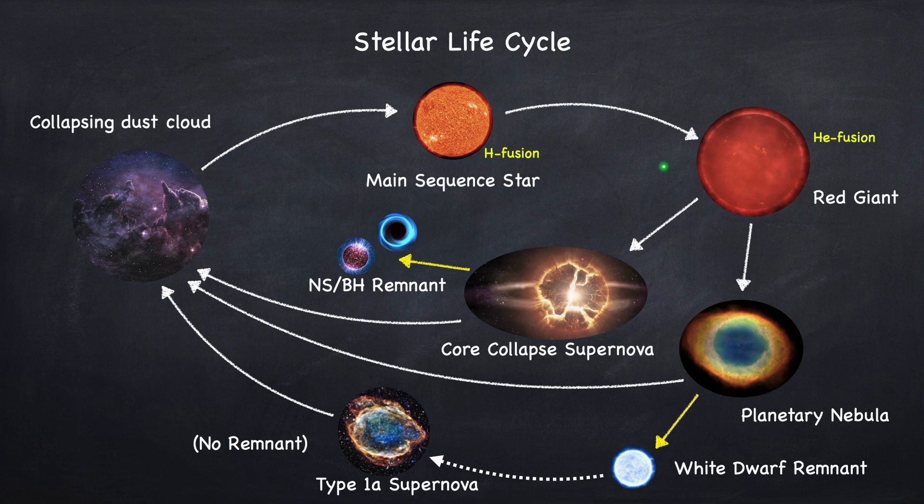Once the red giant's core runs out of helium, there are a few different possibilities. If the star is sufficiently massive, it will go on to the next nuclear burning stage, which is carbon, and then the next one, which is oxygen, until it eventually gets to iron. Once you get to iron, you can no longer release energy via fusion. The star loses its pressure support against gravity and collapses, and you eventually get what's called a core collapse supernova. This will leave behind a remnant of either a black hole or a neutron star, depending on the mass of the star.